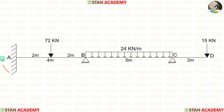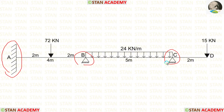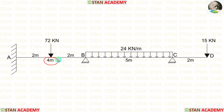At point A, there is a fixed support. At points B and C, there are hinged supports. Span AB is 4 meters long, span BC is 5 meters long, and the overhanging span CD is 2 meters long.